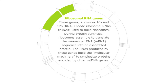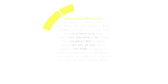Ribosomal RNA genes: these two genes, known as 16S and 12S, are RNAs which are used to build ribosomes. During protein synthesis, ribosomes assemble to translate messenger RNA.